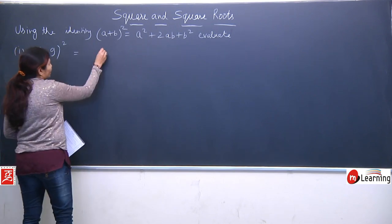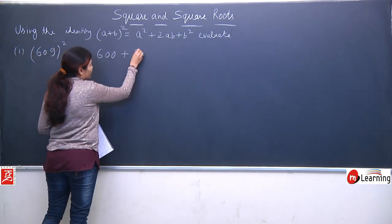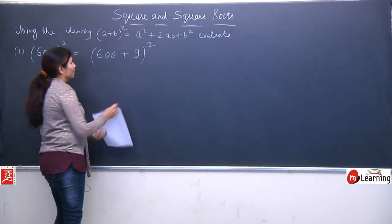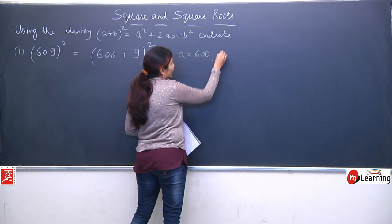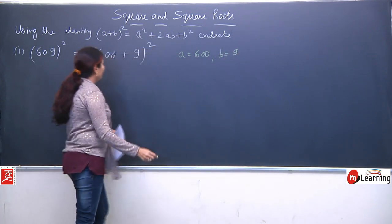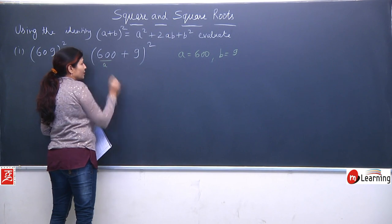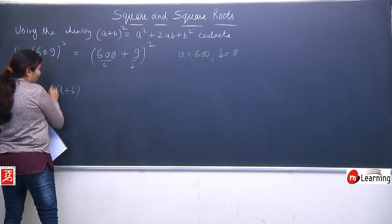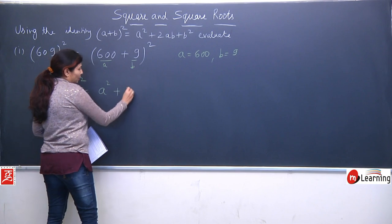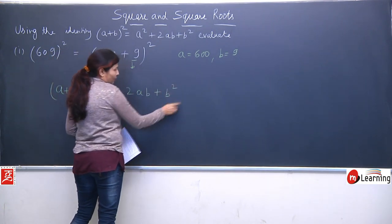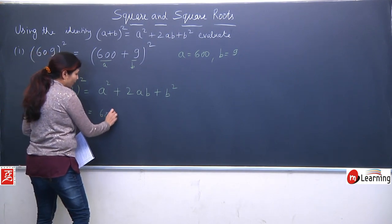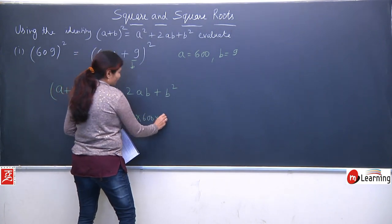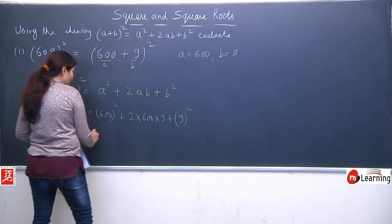So first we will simplify this question. I can write 609 as (600 + 9) whole square. Here we can compare: a equals 600 and b equals 9. This is a and this is b. Our identity says if we have (a+b) whole square, then we can split it as a² + 2ab + b². Now what is our a? 600 square, plus 2ab which is 2×600×9, plus 9 square.